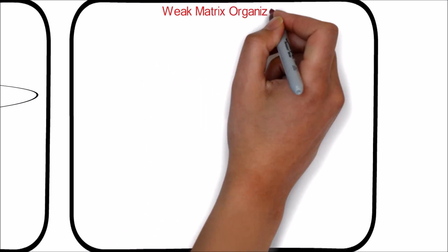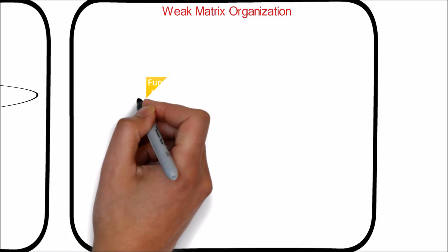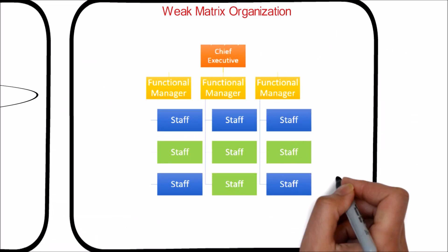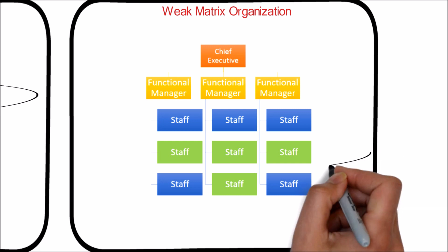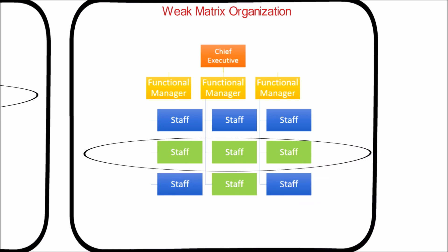Weak matrix organizations maintain many of the characteristics of a functional organization, and the role of the project manager is more of a coordinator or expeditor. A project expeditor works as a staff assistant and communications coordinator. The expeditor cannot personally make or enforce decisions, and project coordination happens at the staff level of each functional unit.